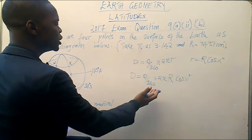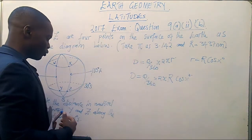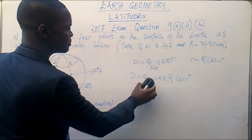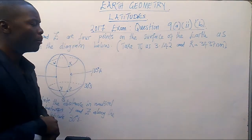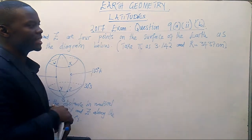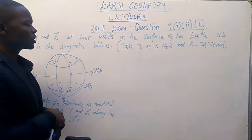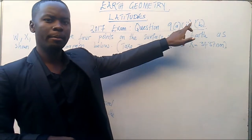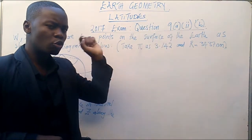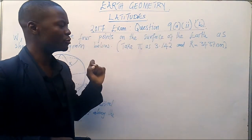Okay, so we are going to use this formula to solve this example which is here. So let me erase this part of the board. So now, this question is an exam question which came into the year 2017, final exam. So the question is question 9A, roman numeral 2B. So we are just going to concentrate on the latitude part.